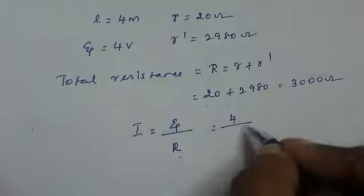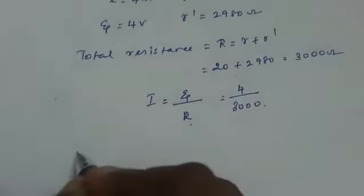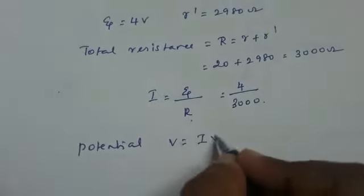That is 4 volt by 3000. Now we have to find out the potential. Potential V is equal to I into R.